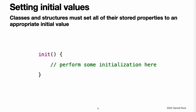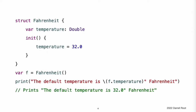Initializers are called to create a new instance of a particular type. In its simplest form, an initializer is like an instance method with no parameters written using the init keyword. This example defines a new structure called Fahrenheit to store temperatures expressed in the Fahrenheit scale. The Fahrenheit structure has one stored property, temperature, which is of type Double.